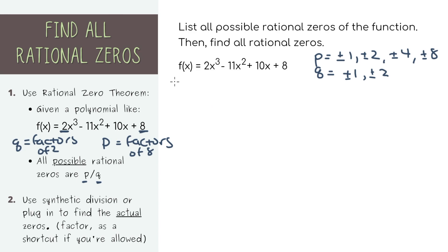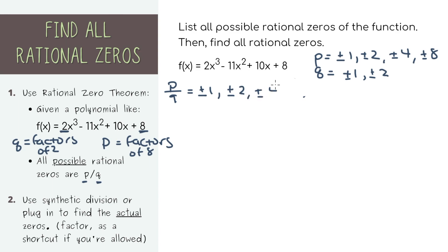So when we try to find p divided by q, you're trying to find all of the different combinations of all of these numbers divided by all of these numbers. Any of these numbers divided by plus or minus 1 is just itself, so a set of numbers that you can write down right away is plus or minus 1, 2, 4, and 8.